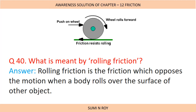Next question: What is meant by rolling friction? Rolling friction is the friction which opposes the motion when a body rolls over the surface of another object. Simply put, rolling friction comes into play when one object rolls on the surface of another object.